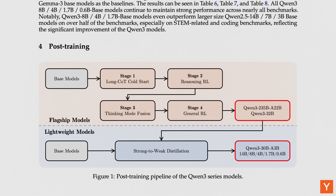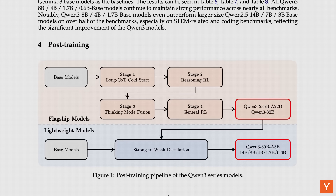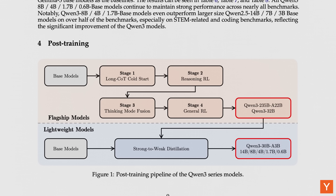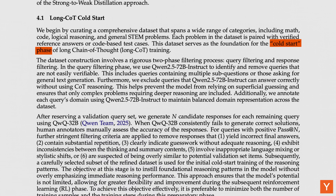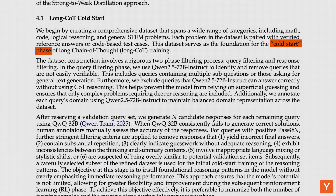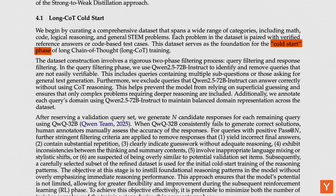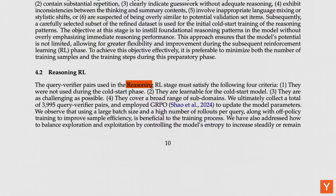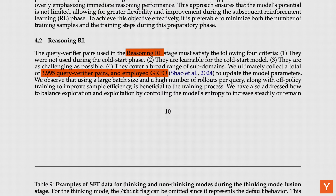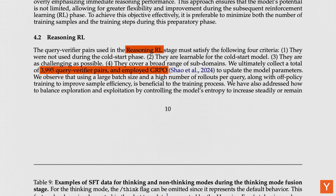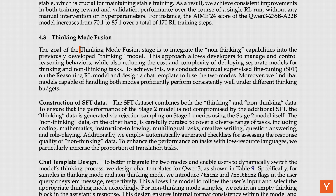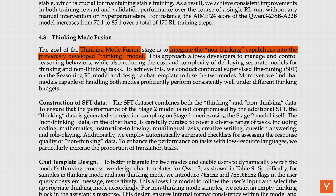Qwen uses a four-step post-training pipeline with two goals: giving users more control over how much reasoning to use for a given query, and enabling efficient distillation of larger model capabilities into smaller models. The first step is a long chain-of-thought cold start stage, which involves feeding the model a curated dataset of challenging reasoning problems from math, logic, and STEM with verifiable reference answers, and filtering outputs for quality. This is followed by a reasoning RL stage using GRPO — an RL algorithm originally developed by DeepSeek researchers — on roughly 4,000 query-verifier pairs to strengthen complex problem-solving. The third step, thinking mode fusion, integrates reasoning and non-reasoning into a single model, letting users switch modes without changing models.